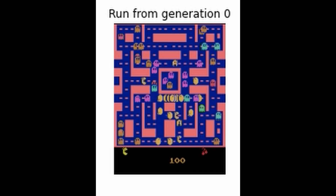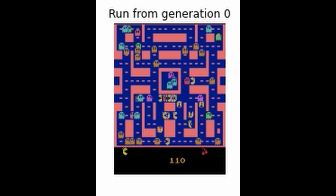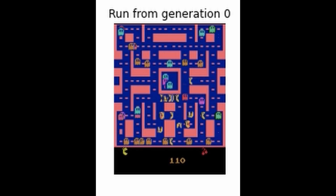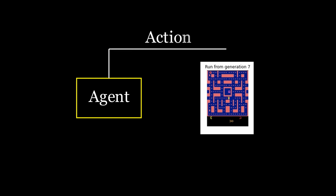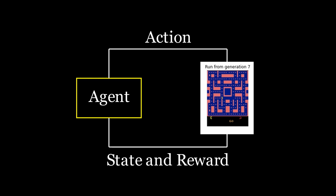Before we get into the details of this algorithm, it would be good to discuss the reinforcement learning framework so that you have a good conceptual idea of what's happening behind the scenes. For every reinforcement learning problem, there's an agent and an environment where the agent sends an action to the environment, while the environment then sends back a state and reward to the agent to give it feedback. This cycle continues until eventually the environment reaches an endpoint.